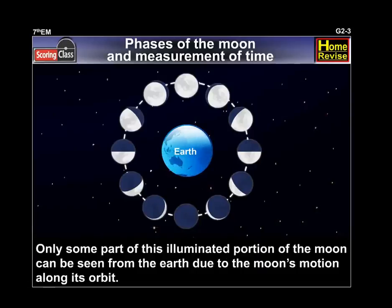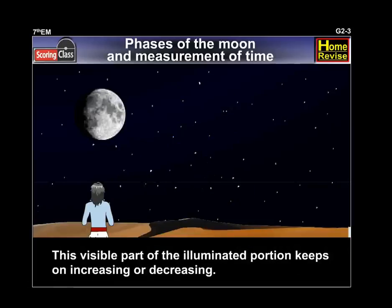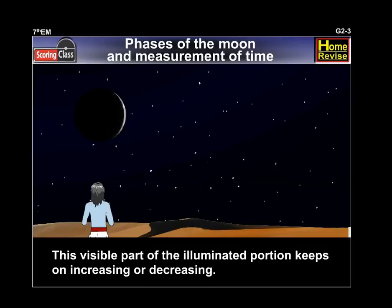However, only some part of this illuminated portion of the Moon can be seen from the Earth due to the Moon's motion along its orbit. This visible part of the illuminated portion keeps on increasing and decreasing.